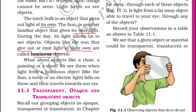Non-luminous objects cannot give light of their own. Our planet Earth cannot give out its own light, and the same is true for our natural satellite, the Moon. Moon cannot give its own light. What we see during night is the reflection of the light emitted by the Sun.